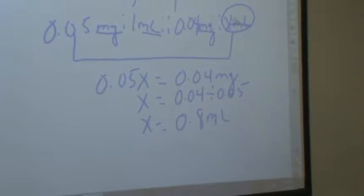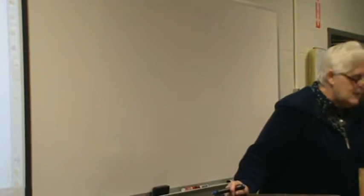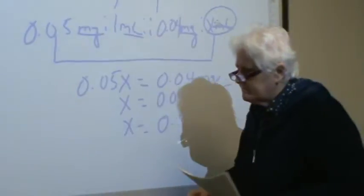Number 15. The physician orders heparin 25,000 units subcutaneous every 12 hours for your patient with the jejunostomy. That is a tube in the jejunum. You have heparin 5,000 units per mil available. How many milliliters will you give? 0.5.